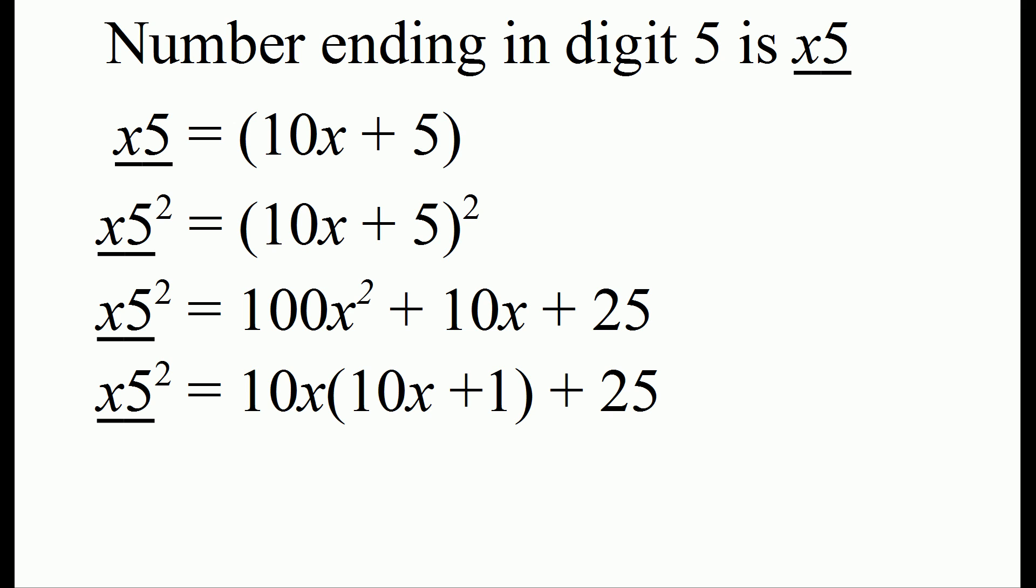We started out with x5 equaling 10x plus 5. Now at the end we have 10x times 10x plus 1. This is the part where we take the number x times 1 more than itself. If we rewrite the algebraic part in terms of the way we normally write numbers, we end up with the number x times x plus 1, and 25.